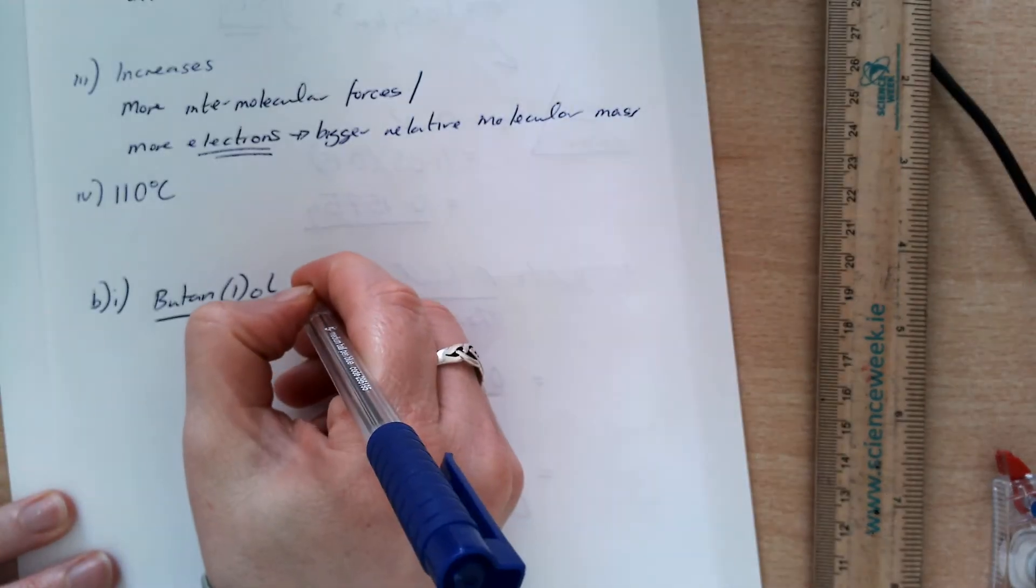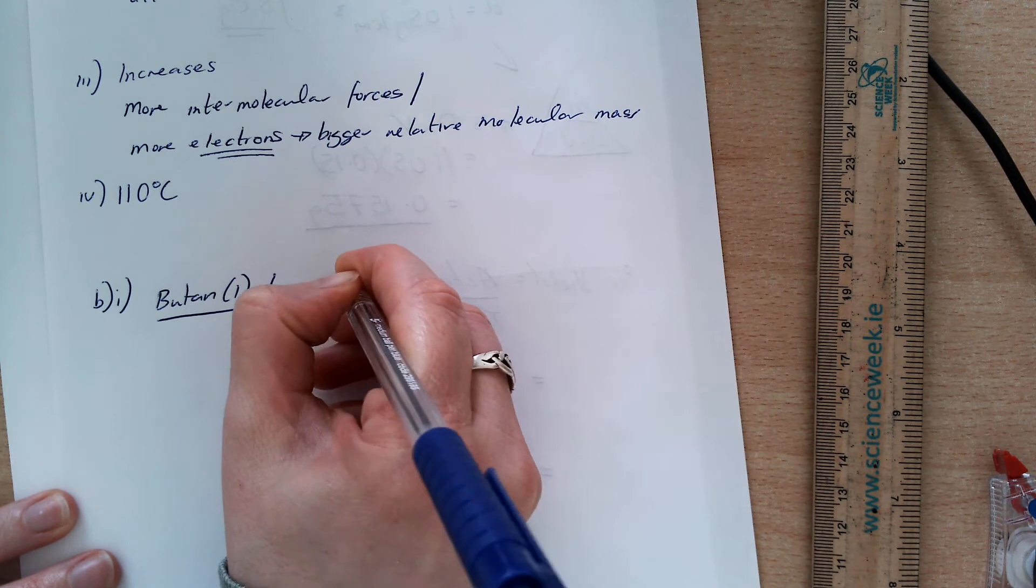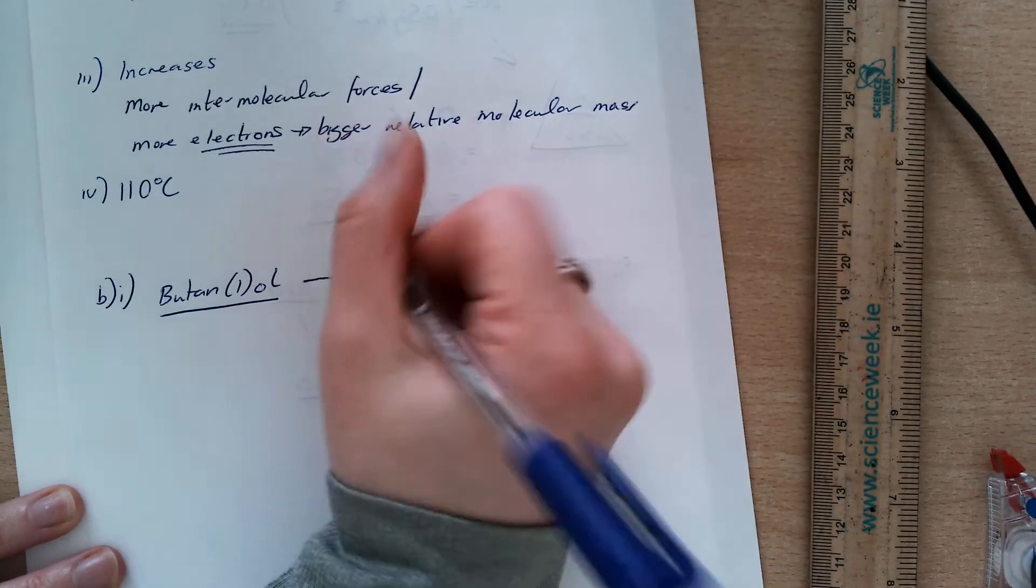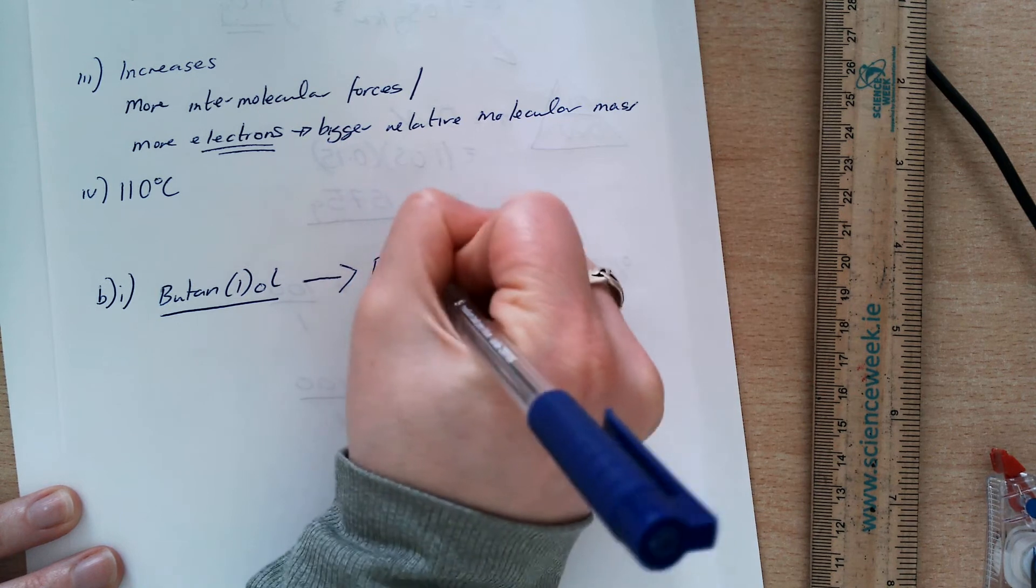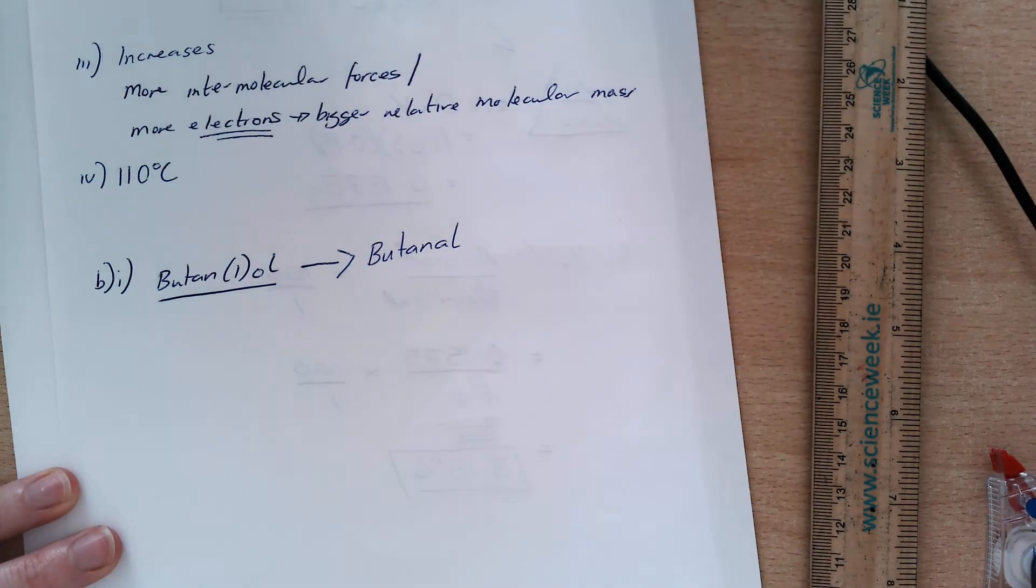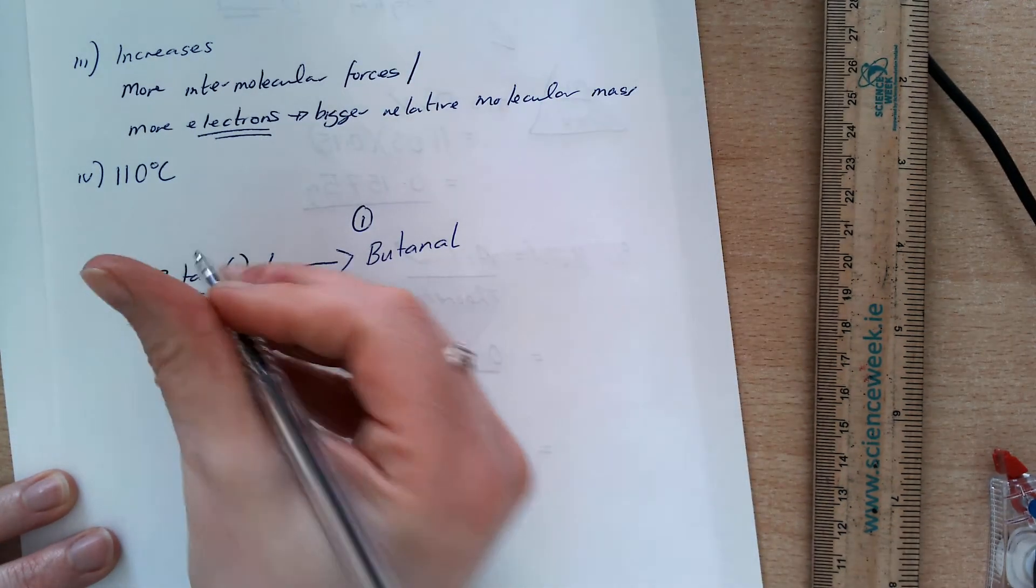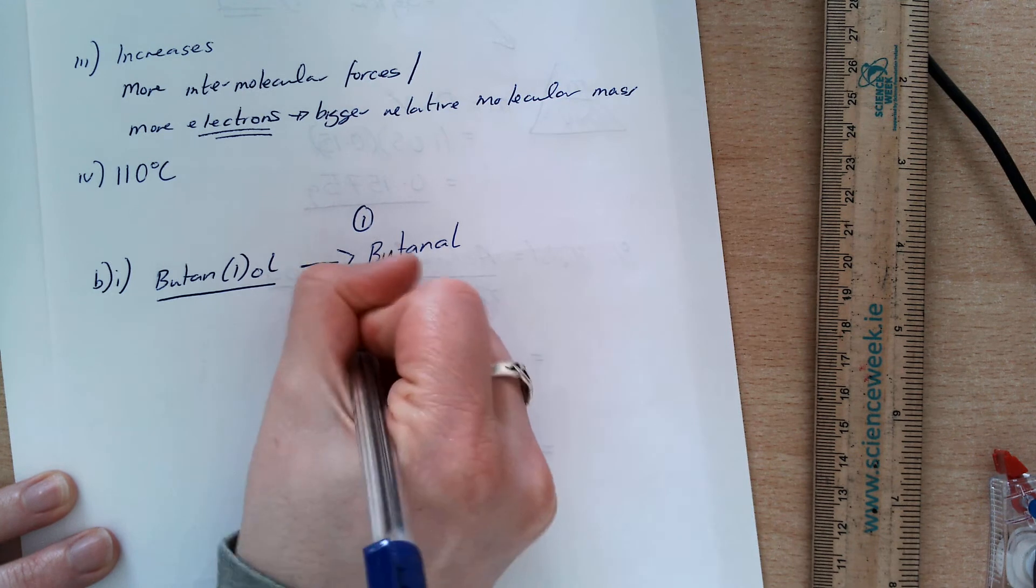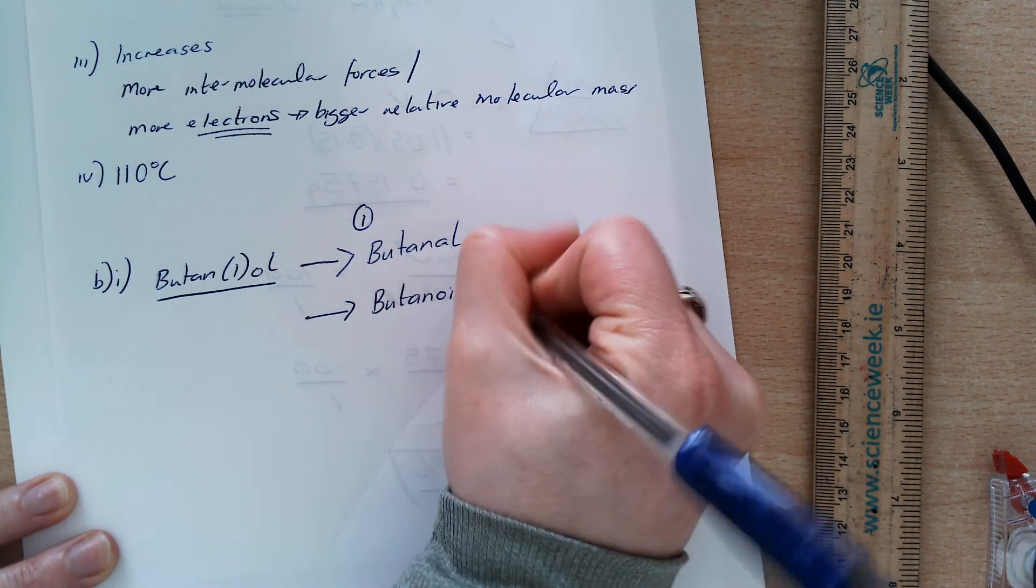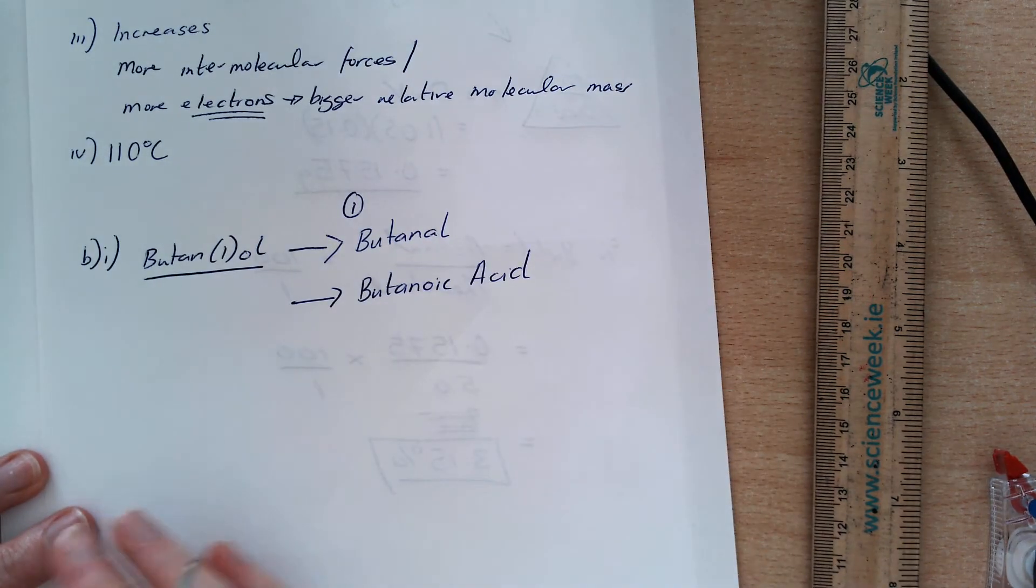So, I have butan-1-ol. This is a primary alcohol. The two possible compounds that this can be converted into by oxidation, firstly, is butan-1-al, which is when its primary alcohol is oxidized to an aldehyde, and when it is oxidized to a carboxylic acid. There's no carbon-carbon bonds being touched there.